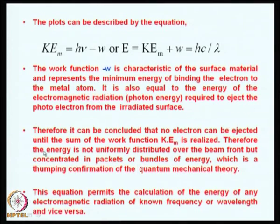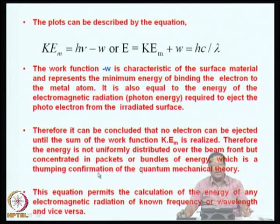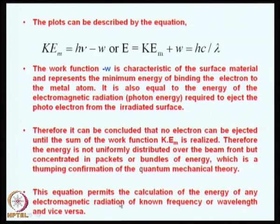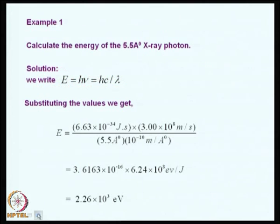You have to keep supplying energy until that voltage is reached — only at that stage will electrons start coming from the cathode and flow to the anode. This is essentially quantum mechanical theory. The thumping confirmation of quantum mechanical theory comes from this photoelectric effect. The equation KE_m + W = hc/λ permits the calculation of the energy of any electromagnetic radiation of known frequency or wavelength and vice versa — if you know the energy, wavelength, or frequency, you can calculate the energy of the electromagnetic radiation.